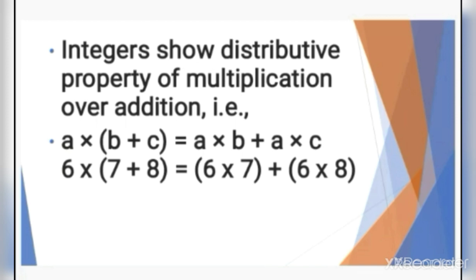Integers show the distributive property of multiplication over addition. For example, A into (B plus C) equals A into B plus A into C. As a specific example, 6 into (7 plus 8): we multiply 6 into 7 and then 6 into 8. Since the sign between 7 and 8 is addition, we do 6 into 7 plus 6 into 8.